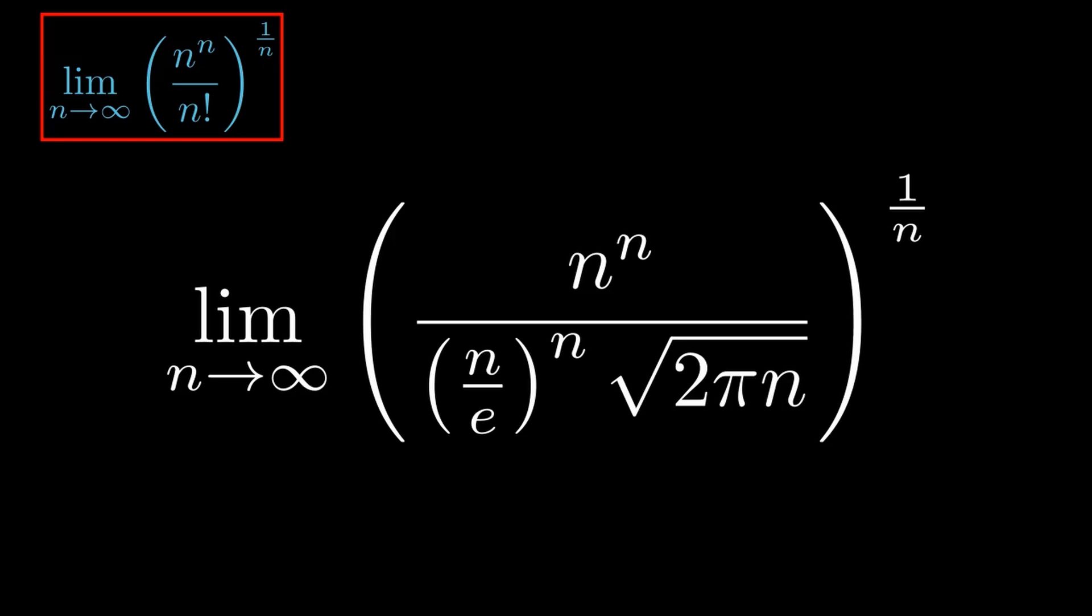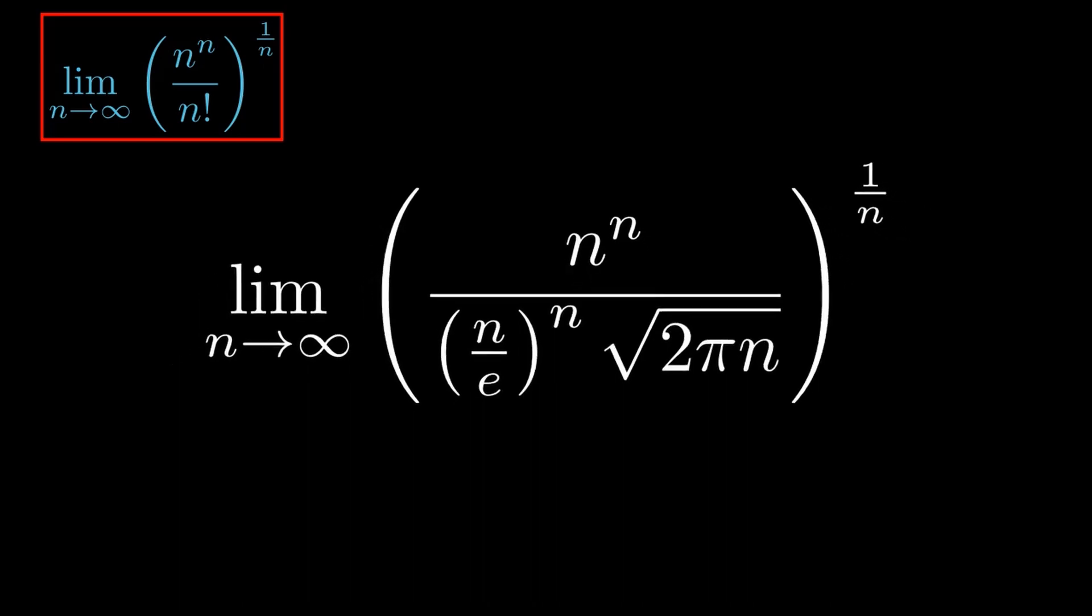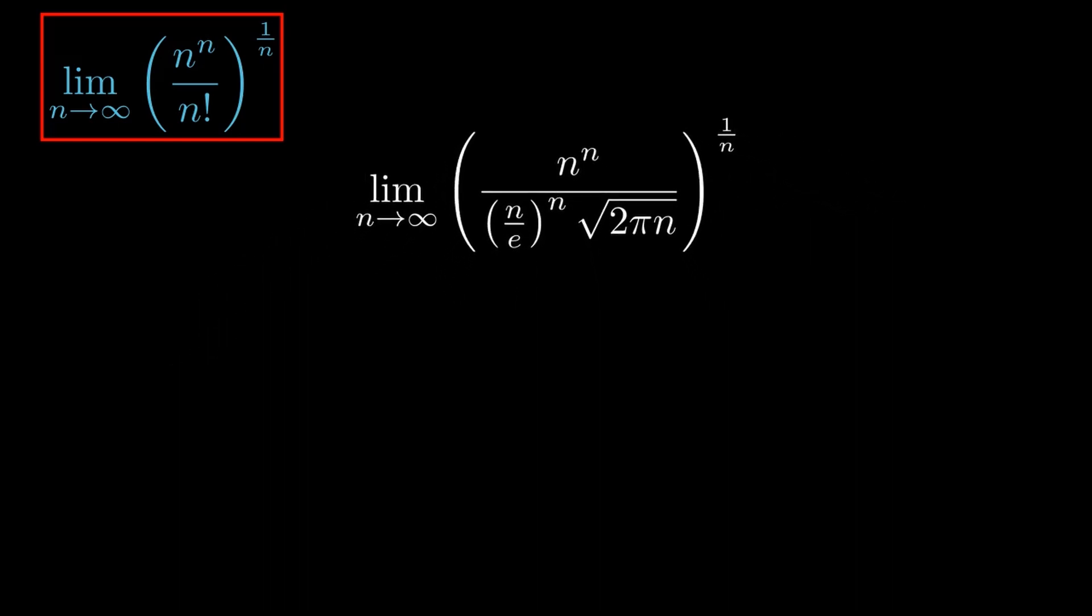Now we're going to simplify by distributing the 1 over n power to the numerator and denominator. Doing so, we get the limit as n goes to infinity of n divided by n divided by e raised to the first power, multiplied by 2πn all raised to 1 over 2n.